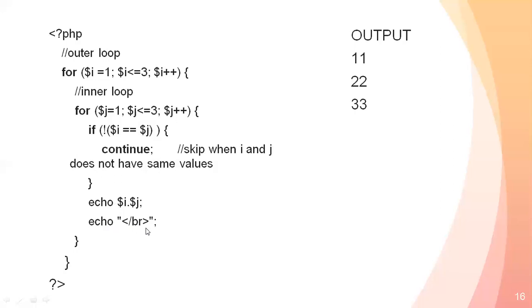I print a new line after each combination. The output shows: 1-2, 1-3, 2-1, 2-3, 3-1, 3-2 — all cases where i and j are not equal. The cases 1-1, 2-2, and 3-3 are skipped by continue because those have the same value.